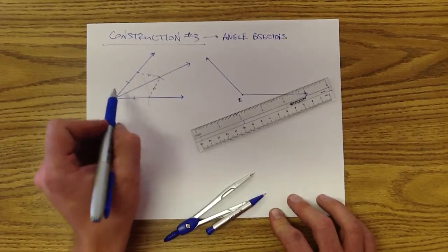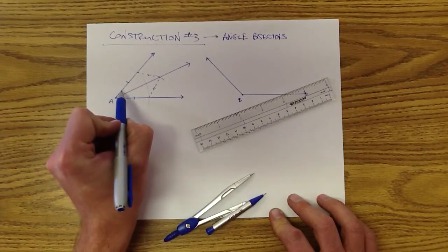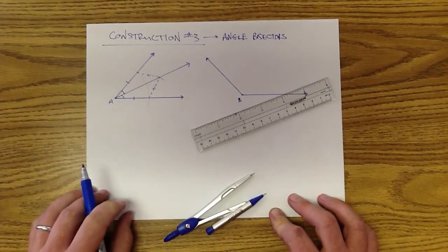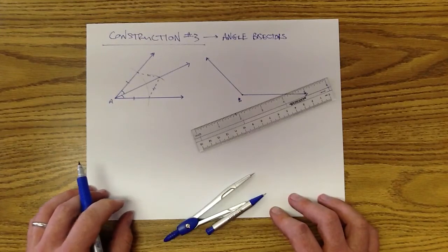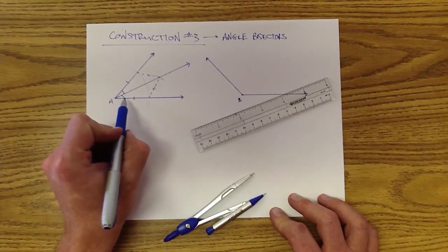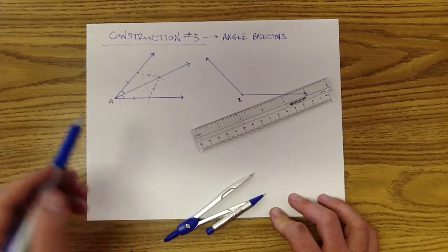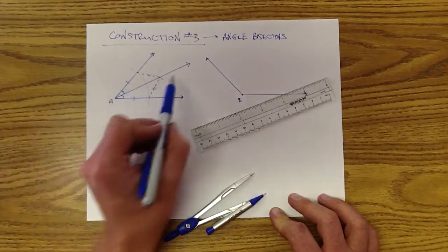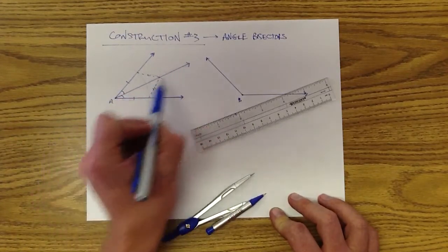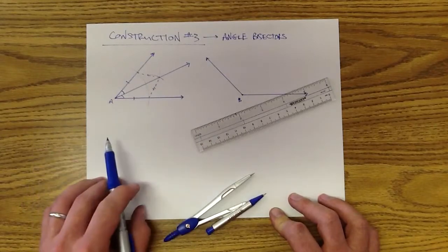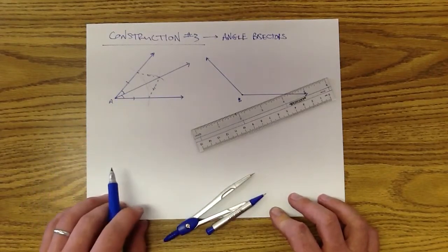Now, congruent triangles means that corresponding parts are going to be congruent. Now, these angles are corresponding angles, so these two angles are the same angle. If these two angles are the same, that means this whole angle was cut in half. So this ray right through here has indeed bisected angle A.